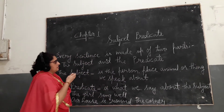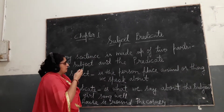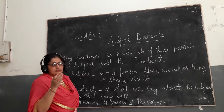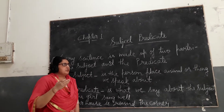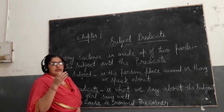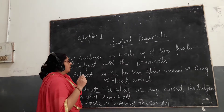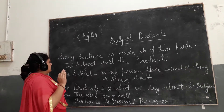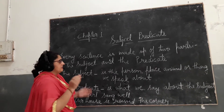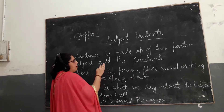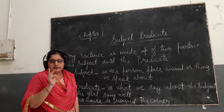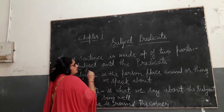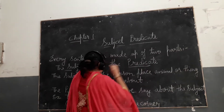In the previous lesson I explained about sentences. A sentence is a group of words which make a complete sentence. Now, what is subject and predicate? Every sentence is made up of two parts — that is called the subject and the predicate.